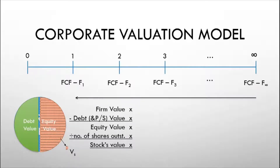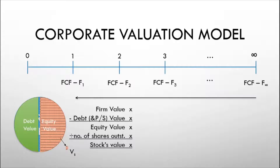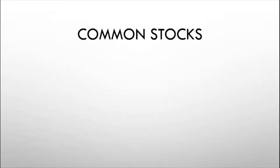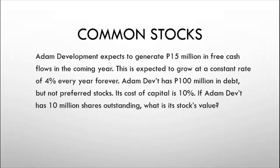We arrive at the firm's value by discounting back the free cash flows to the firm to year 0, reduced by the portion financed by debt and preferred shares. That would leave us with the equity value. Divide this by the number of common shares outstanding and we have the stock's value. This is how we arrive at the value of the common stock. To illustrate, let us refer to the following case.